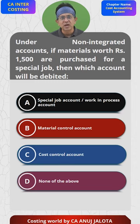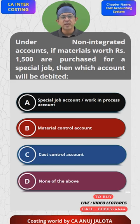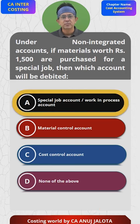Therefore, the account which will be debited is the WIP account, that is the special job account. So the answer should be A. That's the correct answer.